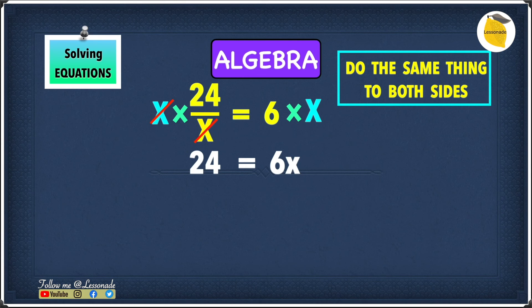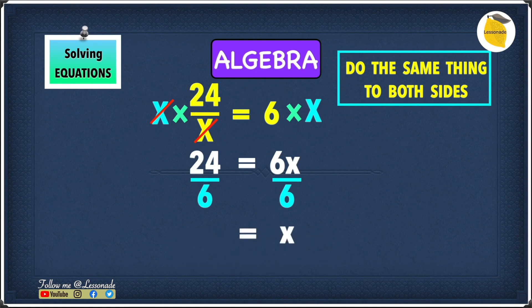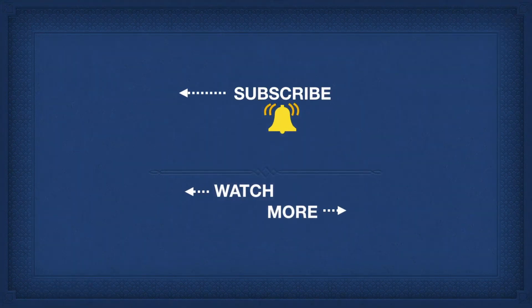We know how to solve 24 equals 6x. The 6 is being multiplied to the x, so to get rid of it we divide both sides by 6. 6x over 6 is just x, and 24 over 6 is 4, which means 4 equals x — or written the conventional way, x equals 4. To learn more on 11 plus maths, click the video on the right, and to learn the previous topic, click the video on the left. Thank you so much for watching, please subscribe to my channel. I'll see you next time. Bye.